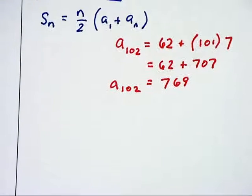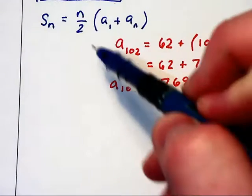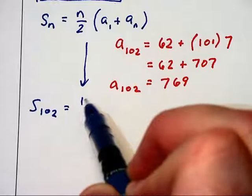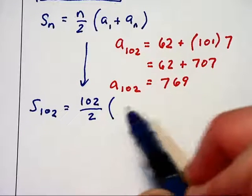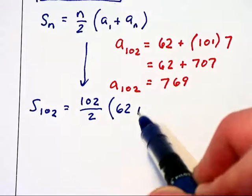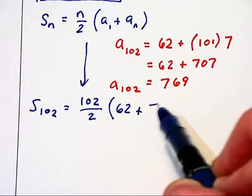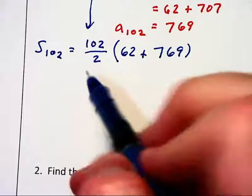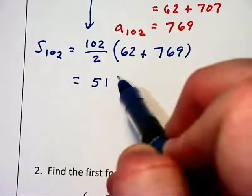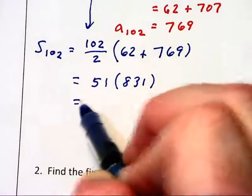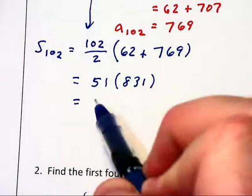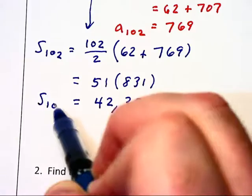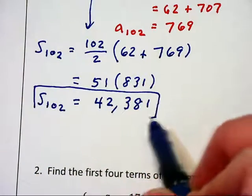Now that we have that term found, we can finish things off using that formula up above. The sum of the first 102 terms is n, 102 over 2, times first term which is 62 plus the last term or the 102nd term which is 769. This is going to equal 51 times 831, or if you have skipped over that line and gone straight to your calculator, you will find that this is 42,381 as the sum of the first 102 terms.